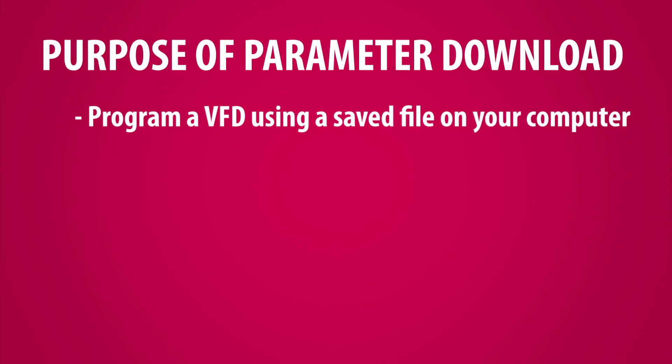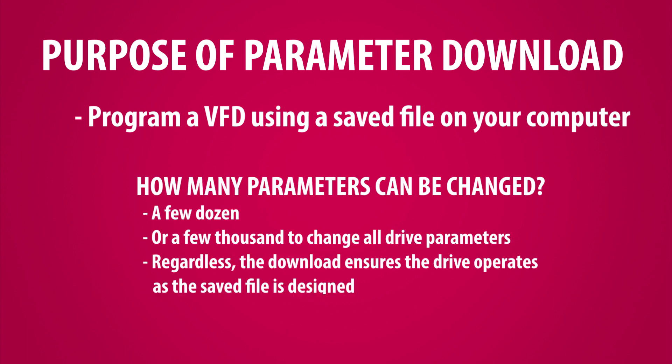For KEB, a parameter download uses a saved file from your computer to program the drive. This process could change as few as a dozen parameters in the drive, or it could program a few thousand parameters and include every parameter in the drive. Regardless of how many parameters are programmed, the download ensures the drive operates as the saved file is designed.